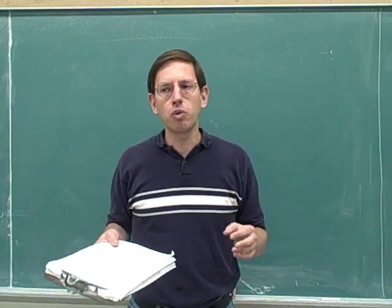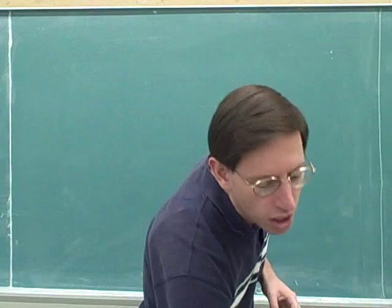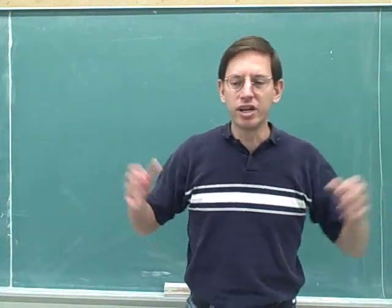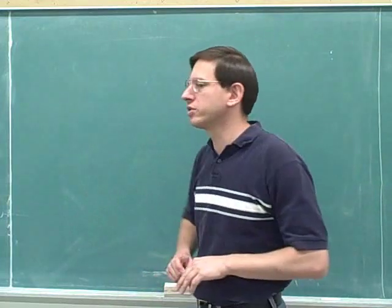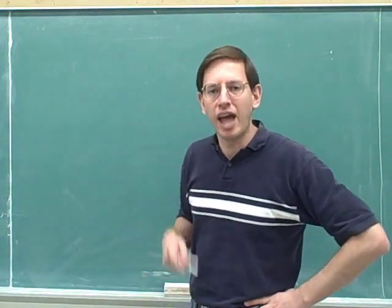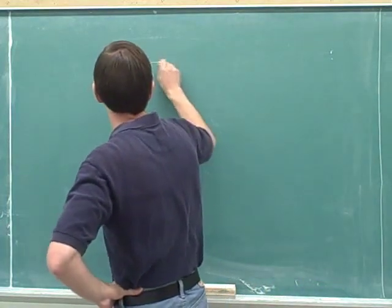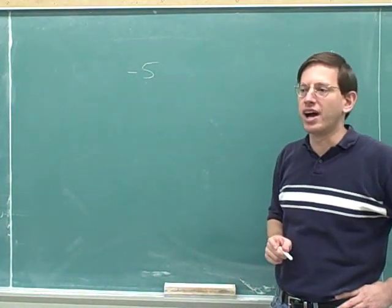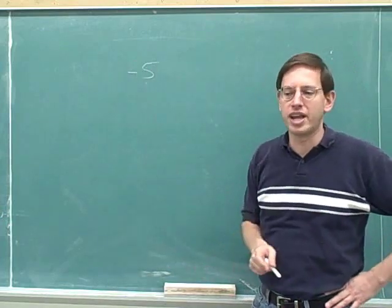The key to the approach is that we're always consciously going to think about every sign. In particular, we are always going to put the sign on any number. Suppose I told you I was thinking about the number negative 5. How would you write that down? Well, you'd have to include the sign because otherwise we wouldn't see that it was negative.